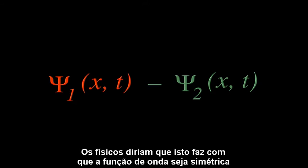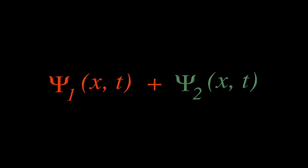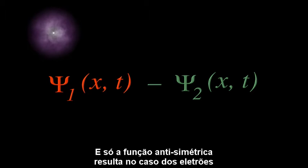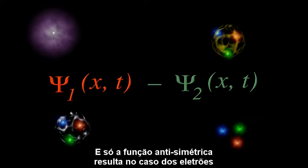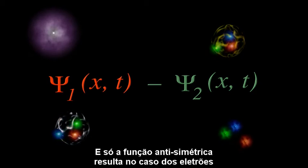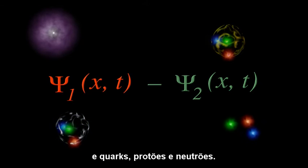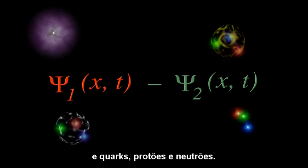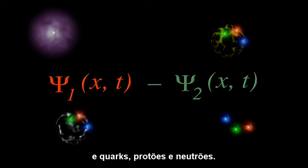Physicists would say this makes the wave function either symmetric or anti-symmetric. And it turns out that only the anti-symmetric function works for the electrons, and quarks, and protons, and neutrons.